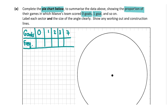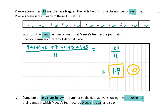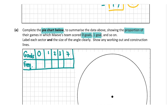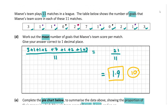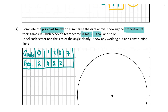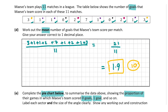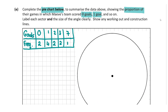Going back to the data: they scored zero goals two times, one goal four times, two goals two times, three goals two times, and seven goals one time. Let's verify: two plus four plus two plus two plus one equals 11, which matches the 11 matches. Perfect.